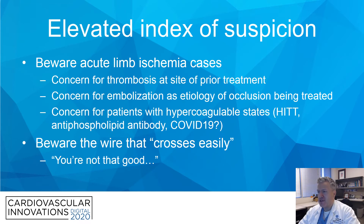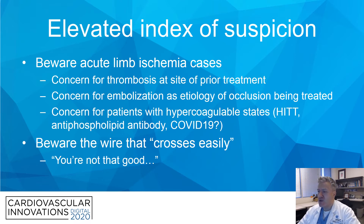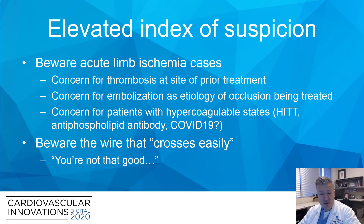It is absolutely key to maintain an elevated index of suspicion. Beware acute limb ischemia cases and the risk they pose. If there's a potential thrombosis at sites of prior treatment, or concern for embolization as the etiology of occlusion — such as patients with atrial fibrillation or ventricular thrombus — beware of hypercoagulable patients, whether that's heparin-induced thrombocytopenia with thrombosis, antiphospholipid antibody, or COVID-19 patients with increased risk of thrombotic events.